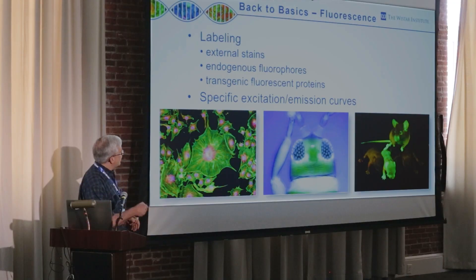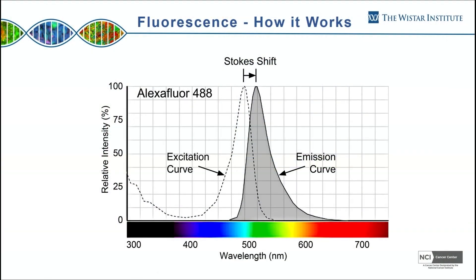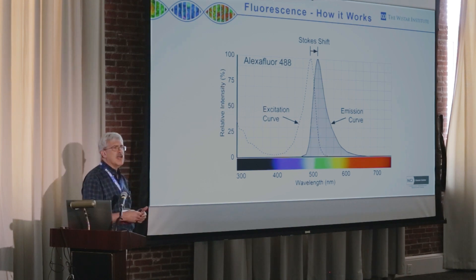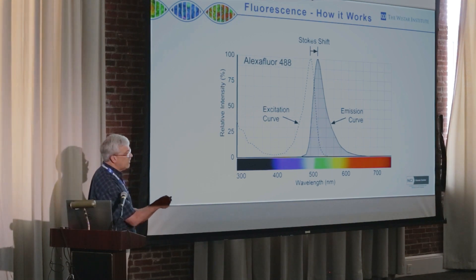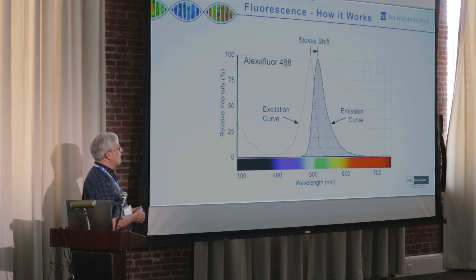When talking about fluorescence, we have to look at specific excitation and emission curves. These are unique to every fluorophore. Every one has its own excitation and emission range. Looking at this curve set for Alexa 488, the dotted line shows that exciting this fluorophore with any wavelength along that dotted line will make it fluoresce. When it fluoresces, it emits greener light along that solid line — that shift from left to right is the Stokes shift. The peak is around 488 nanometers, emitting around 520 nanometers, but it extends along the entire curve.